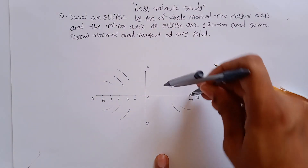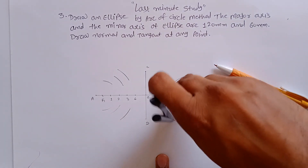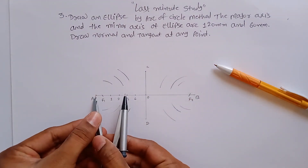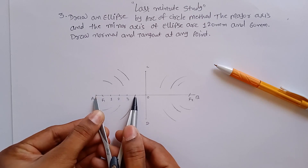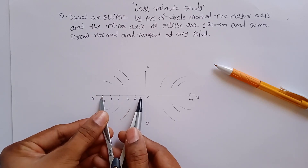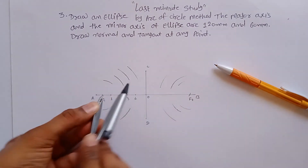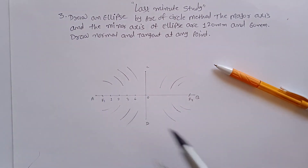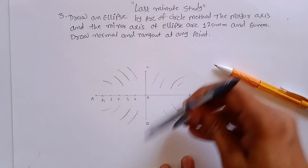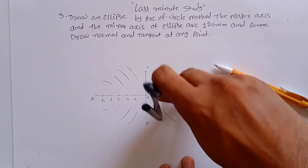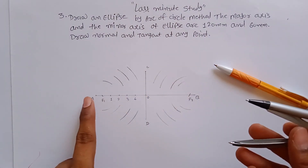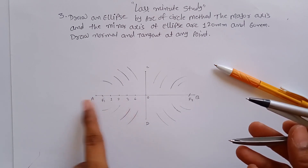A-to-3 is the distance and F1 is the center — make an arc above and below, maintaining that distance. Then make an arc from F2 as center. For the last point, take A-to-4 as radius with F1 as center and make an arc above and below, and similarly from F2 above and below.